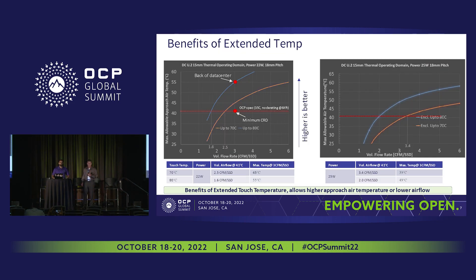The benefits of extended temp are simple — higher is better. This shows the approach ambient temperature versus the volumetric flow rate in the platform. If we can improve the ambient temperature, we need less airflow — either increasing the ambient temperature or requiring less airflow. The orange shows the 70 degrees C traditional touch temp, and up to 80 degrees C is in blue. With the 22 watt U.2 drive, we are barely meeting the OCP spec of 35 degrees C, at around 3 CFM per SSD in the platform for this form factor. When we enable this feature, we are able to improve that quite a bit.